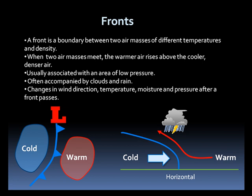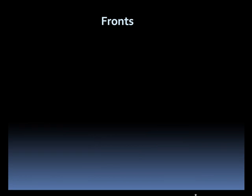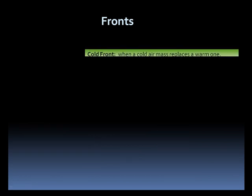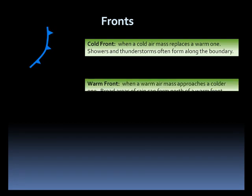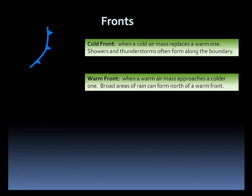Let's take a look at these frontal types. Cold fronts occur when a colder air mass replaces a warm one. Precipitation usually accompanies a cold front. A warm front is a boundary where warm air is replacing cold air. Clouds and broad areas of precipitation can form ahead of a warm front.